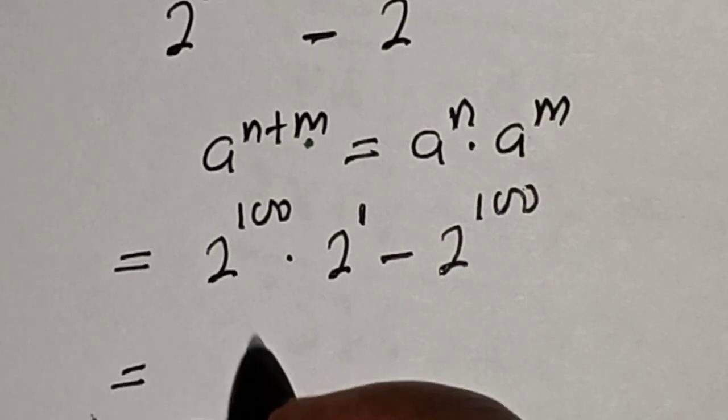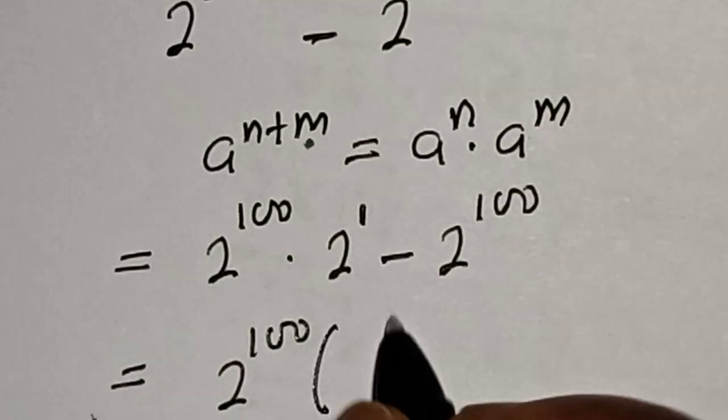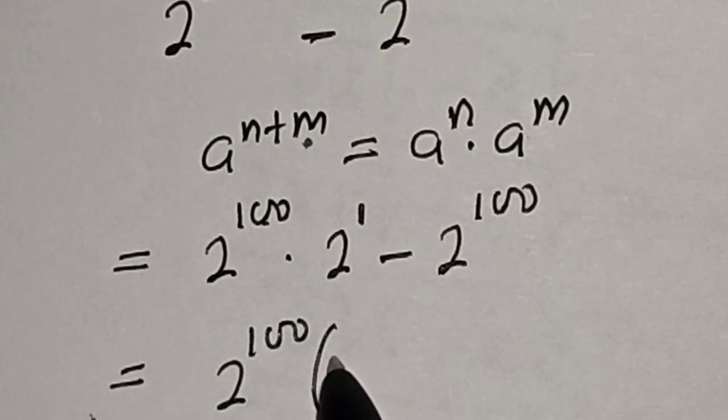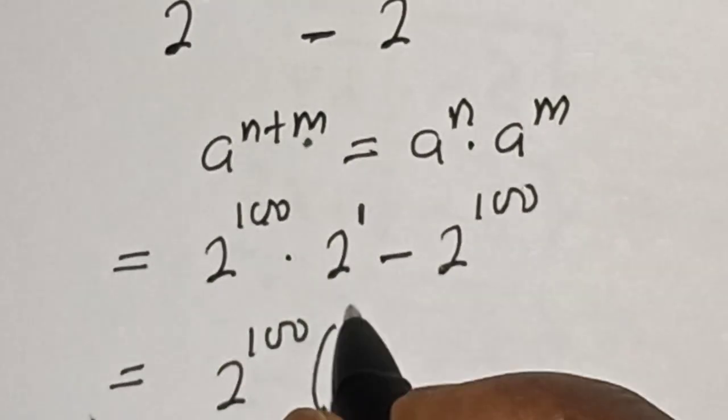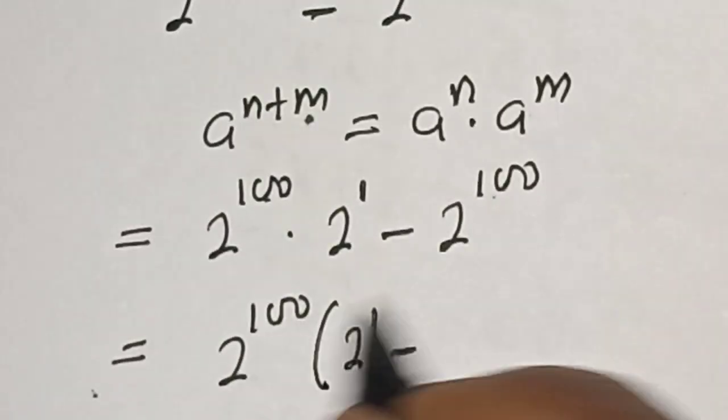This is equal to 2 raised to power 100 is common. Let's bring it out. Bracket, this divided by this, we have 1 times 2 raised to power 1 is 2 raised to power 1 minus this divided by this, 1.